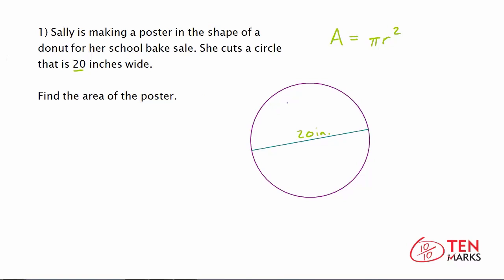Recall that the area of a circle is A = πr². So we need to find the radius. The radius is half of the diameter, so it would be the distance from the center of the circle to the circumference. If we're looking at half of the diameter, we're looking at 20 divided by 2, which is 10. So the radius equals 10.